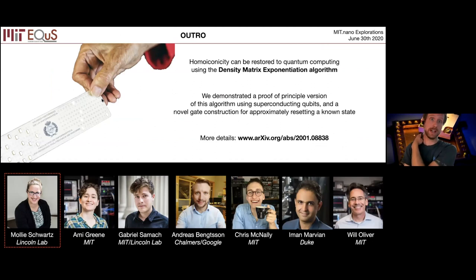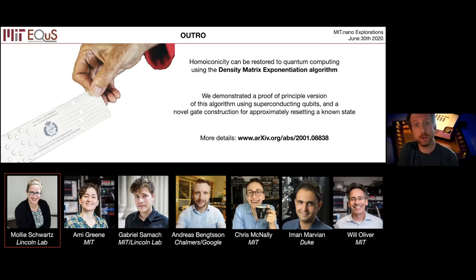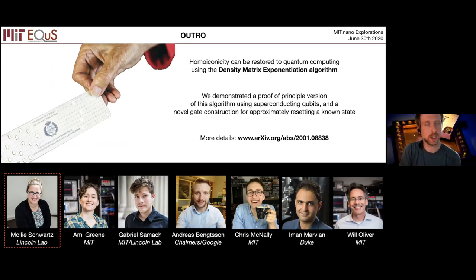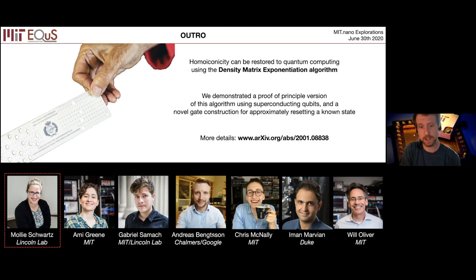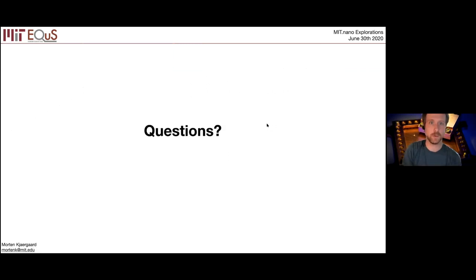The property of homoiconicity can be restored to quantum computing using this density matrix exponentiation algorithm. We've demonstrated a proof-of-principle version using qubits and this gate construction for approximately resetting the state. Key collaborators include Molly Schwartz, a research scientist at Lincoln Lab; graduate students Amy Green, Gabriel Samak, and Chris McNally; Bengtsson, a former Chalmers grad student now at Google; theorist Iman Marvian, now a professor at Duke; and PI Will Oliver.